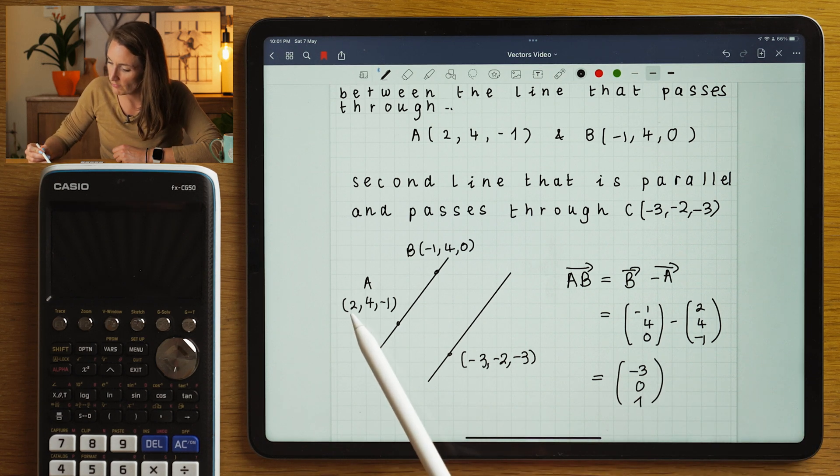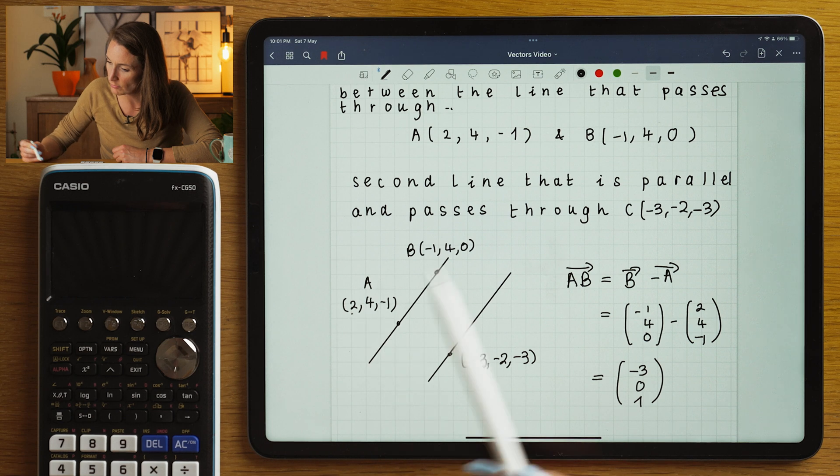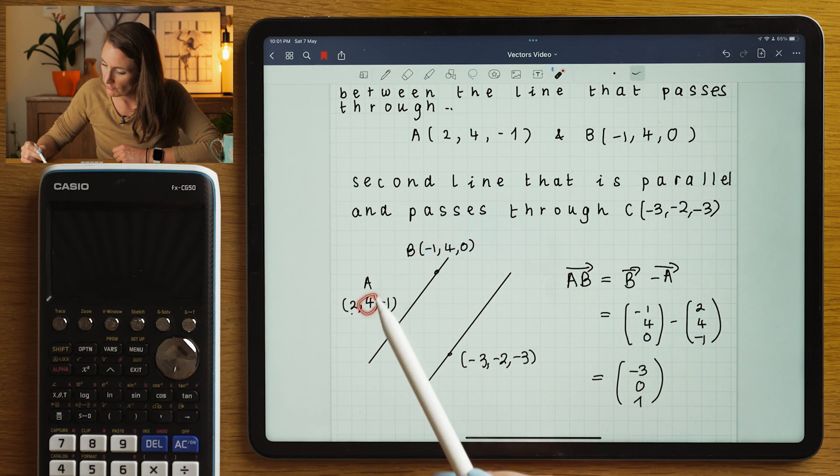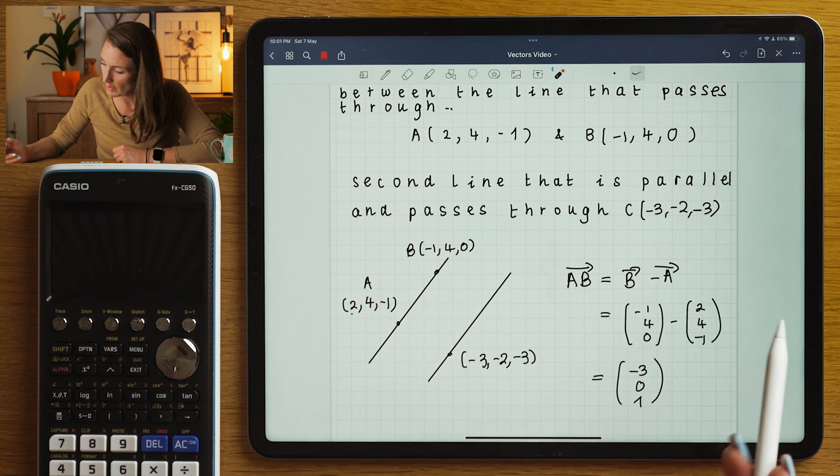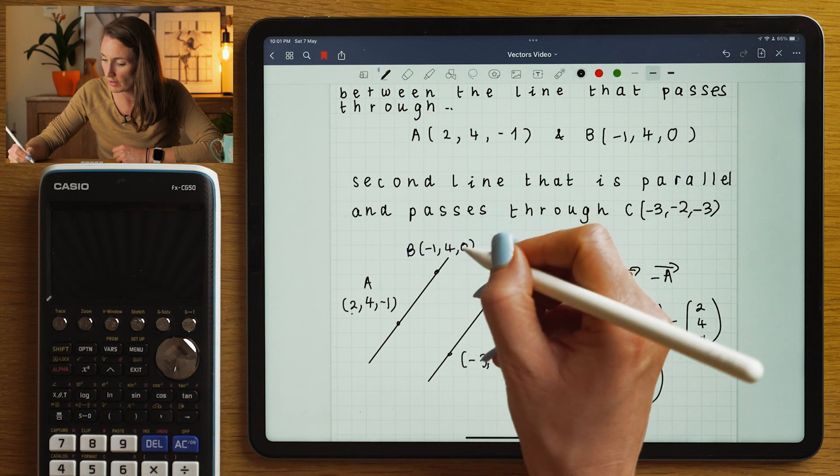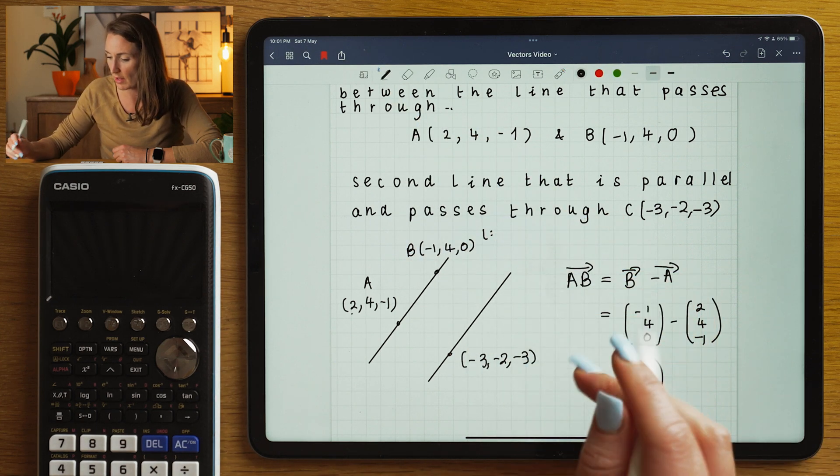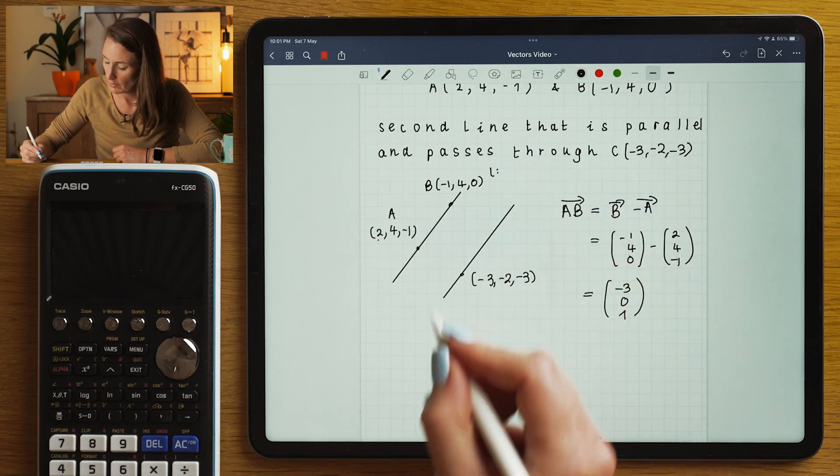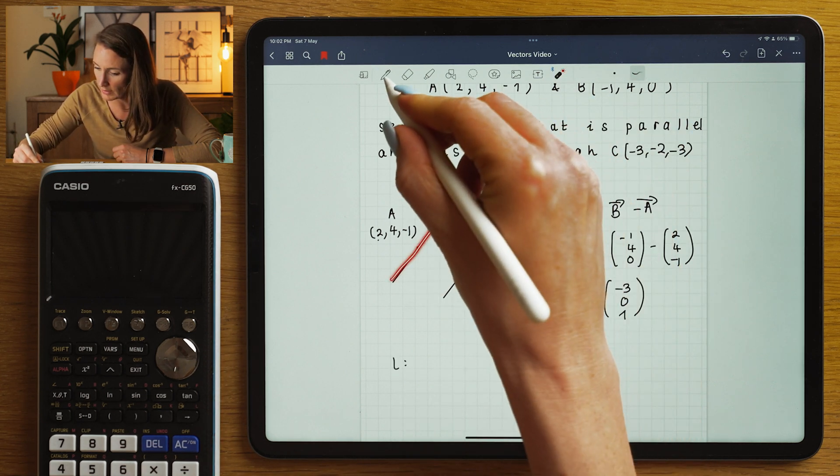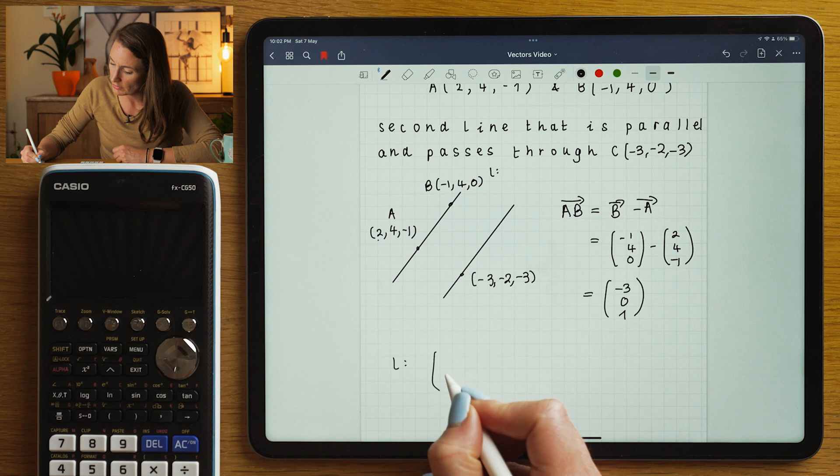Let's check if that works. If I add -3, if I subtract 3 here, I'll get that one. If I move 0 directions here, and then if I move plus 1 here. So that's really cool because now we can write the equation of this line. So the equation of the line here, joining A to B,